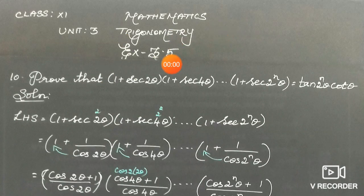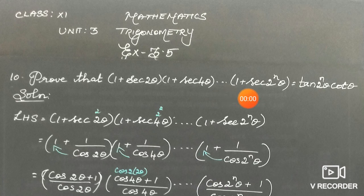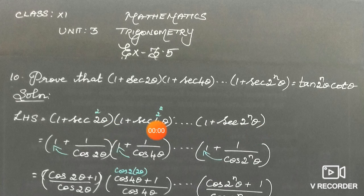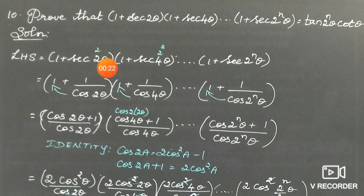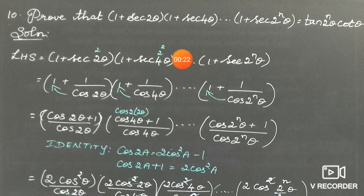Unit 3 Trigonometry, Exercise 3.5, 10th sum. Prove that (1 + sec2θ)(1 + sec4θ)... (1 + sec2ⁿθ) is equal to tan(2ⁿθ)·cotθ. Note that the angles are 2θ which is 2 power 1, then 4 which is 2 squared, and the next product is 2 cubed, and so on. The last product is 2 power n, so you have n products.